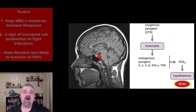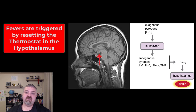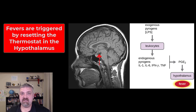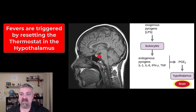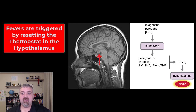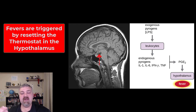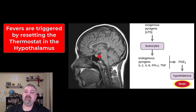Let's talk about how fevers actually occur. So the hypothalamus, which is the homeostatic control center of the human body, is what generally controls your thermostat, your core temperature. So a fever is going to involve chemicals that are going to upregulate that core temperature — they're going to turn the thermostat up.